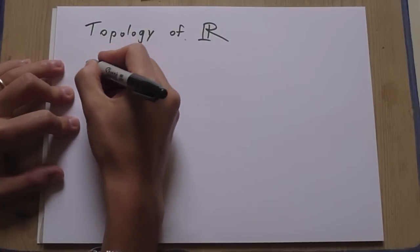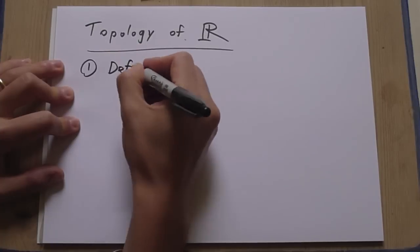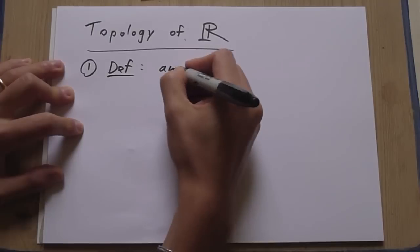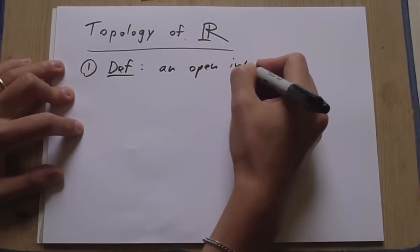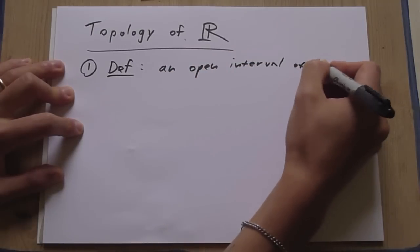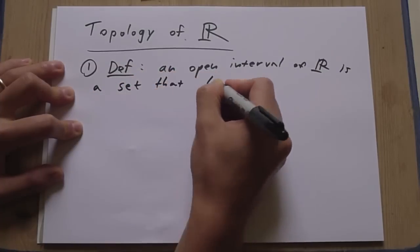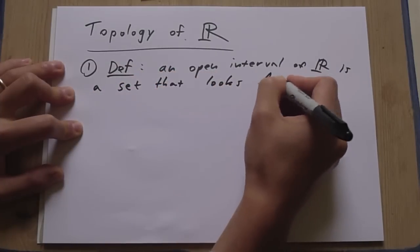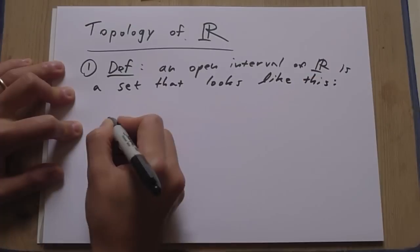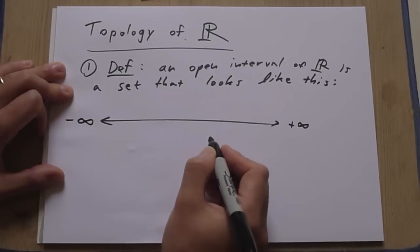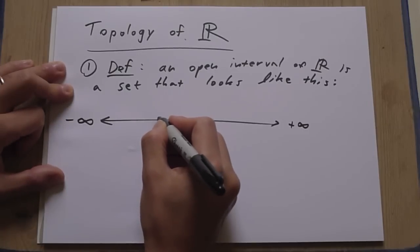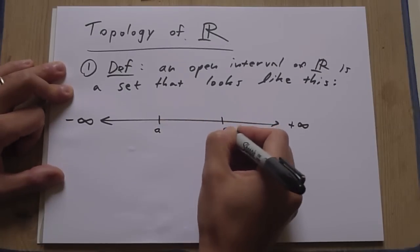Well, first, this step one is we have to define an open interval definition. An open interval of R is a set that looks like this. So here's the real number line. And then you can choose two points on it, A and B.